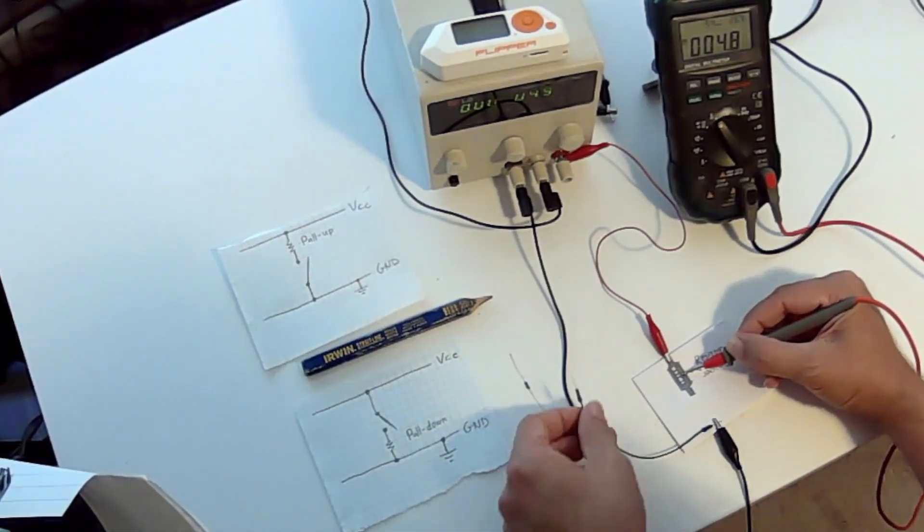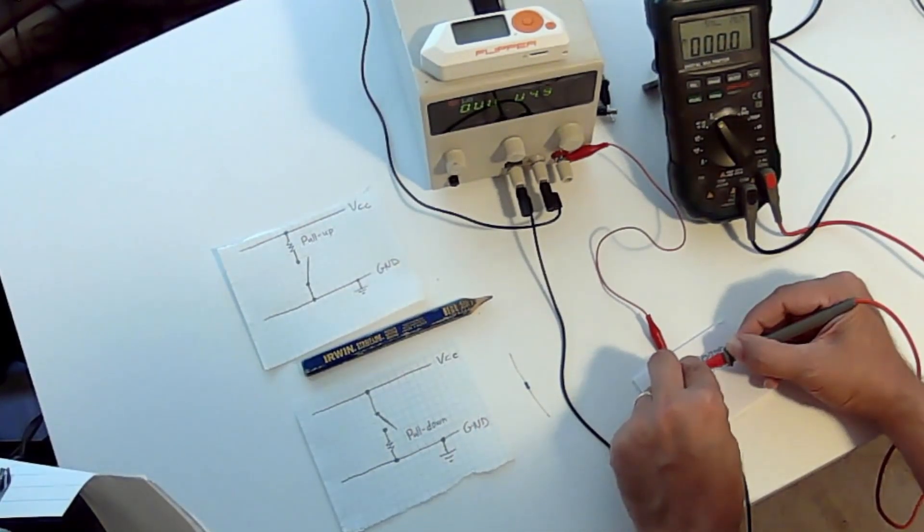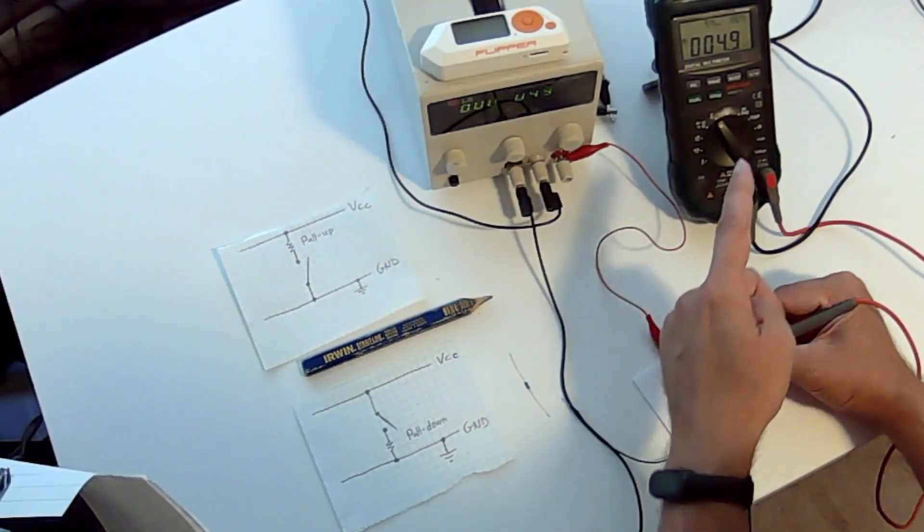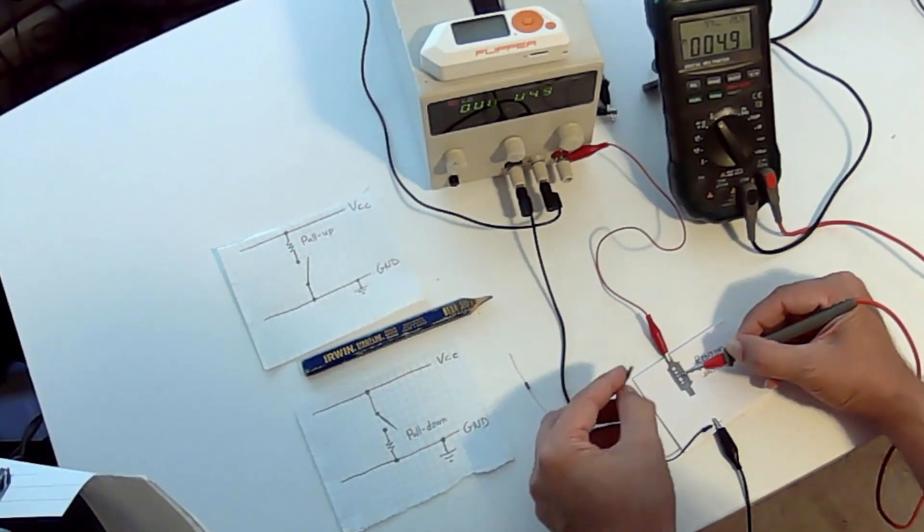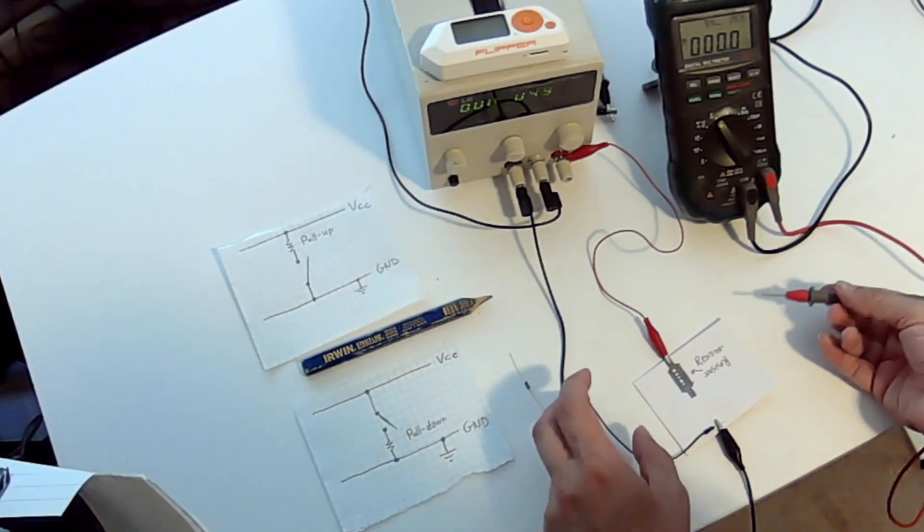Now, if we take that wire or the switch and we connect it, then as expected, our voltage is zero. So when we open the switch, our voltage is high. And when we close the switch, our voltage goes to zero.